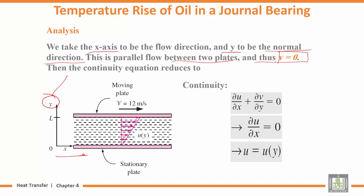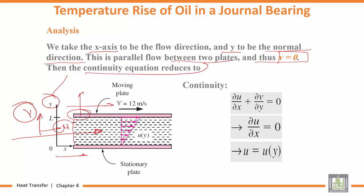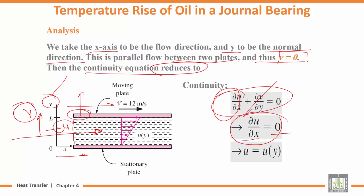Why does v equal zero? Because the plates only move in the x-direction, not upward, so there is no velocity component in the y-direction. The v-component is always zero. The continuity equation then reduces to du/dx = 0, meaning u depends only on y.